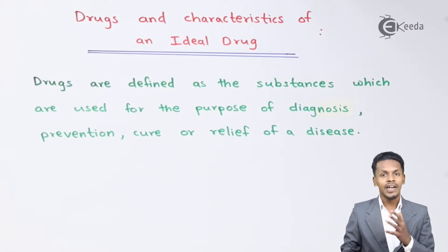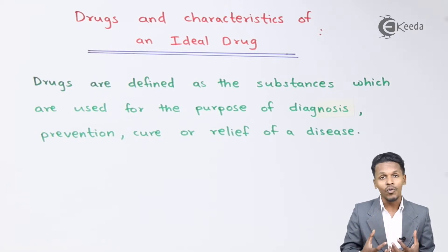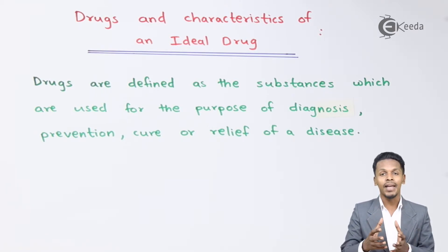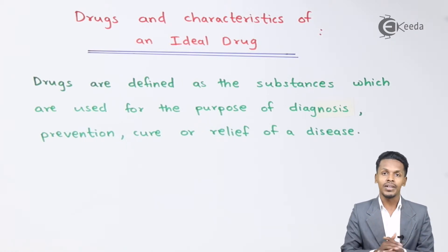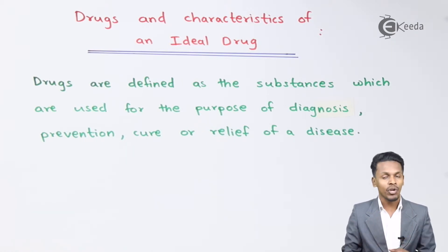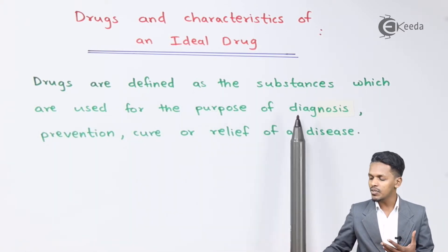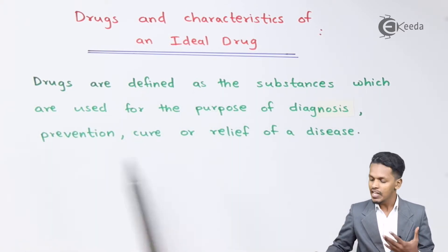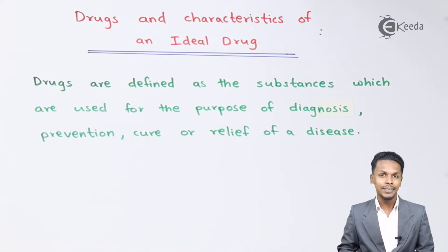Drugs is what we understand — it is a medicine which kills the microorganisms, and thereby it makes us cure. So what is the actual definition of drug? Drugs are defined as the substance which are used for the purpose of diagnosis, prevention, cure or relief of a disease.